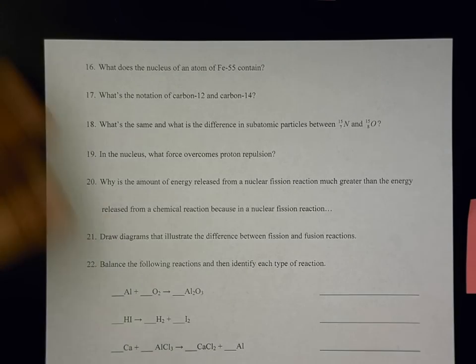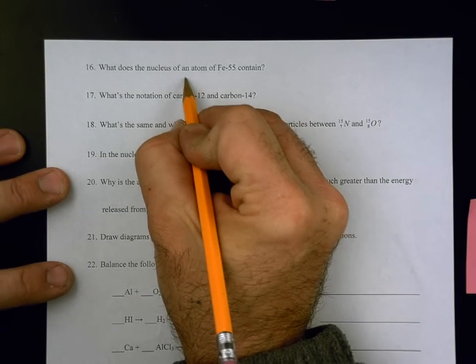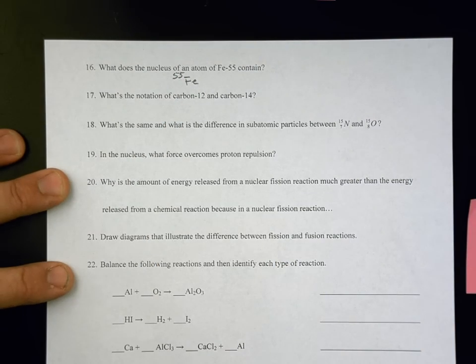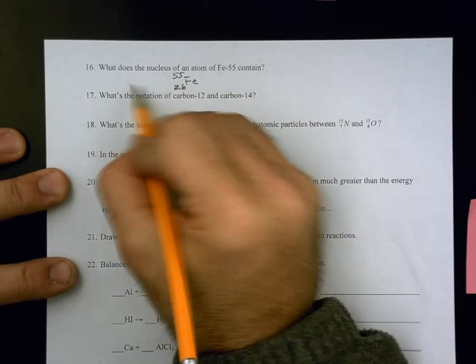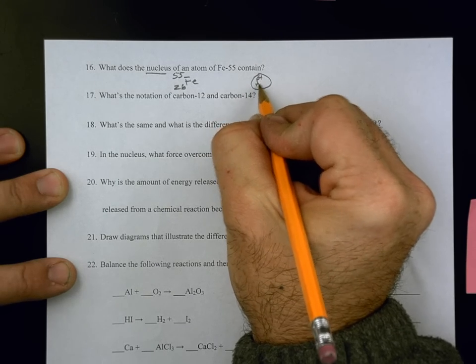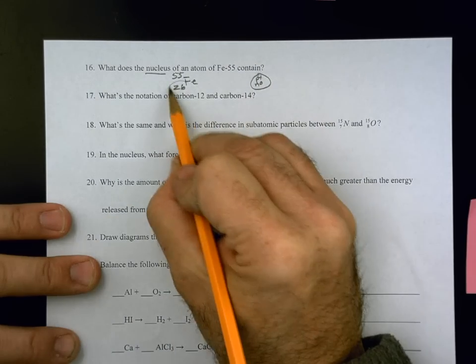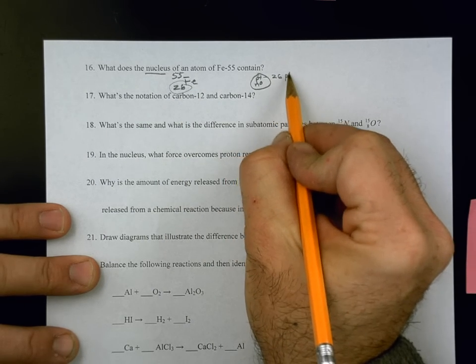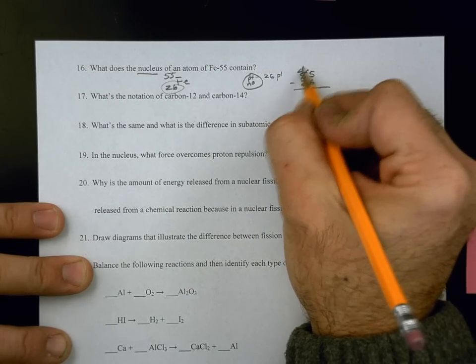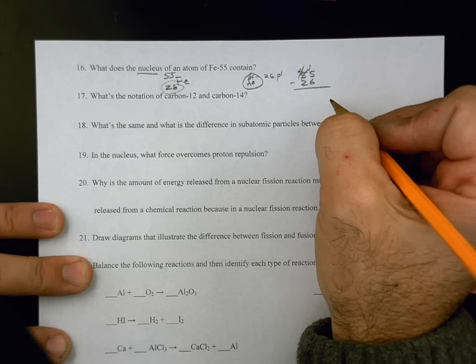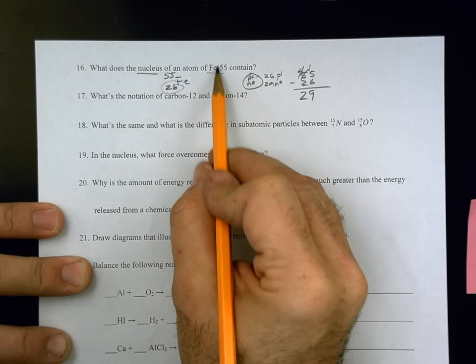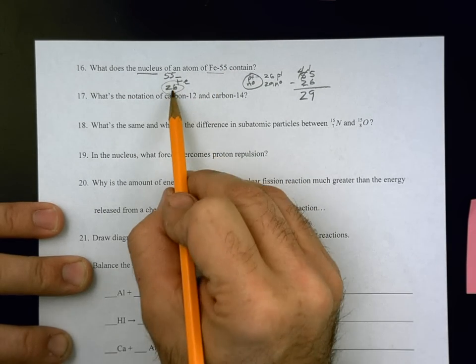Number 16, what does the nucleus of an atom Fe-55 contain? Fe is iron. 55 tells you its mass. When you look on the periodic table, iron's atomic number is 26. In the nucleus of an atom, we have protons and neutrons. We're not worried about the electrons. The atomic number is going to tell us how many protons we have, so there's 26 protons. And then we have to do some math, 55 minus 26. So we're going to have 29 neutrons in the nucleus of the isotope iron-55. Remember, that tells you its mass number. You subtract the atomic number to find neutrons.